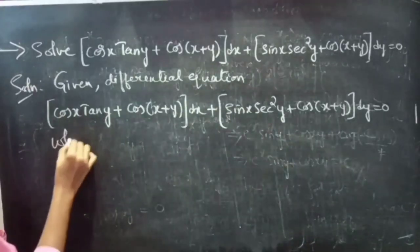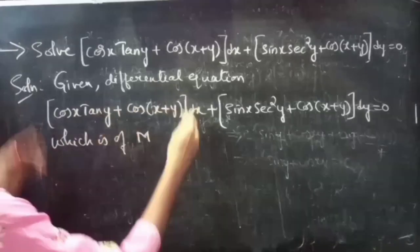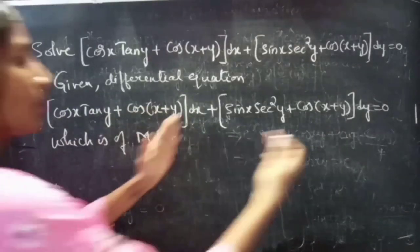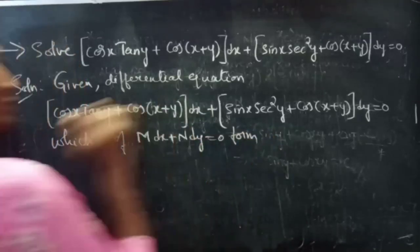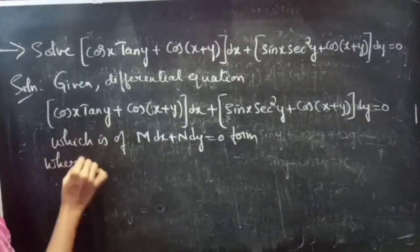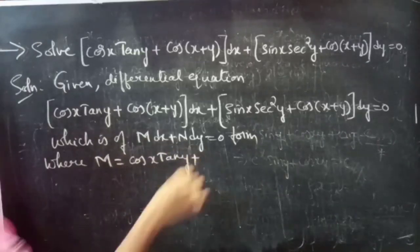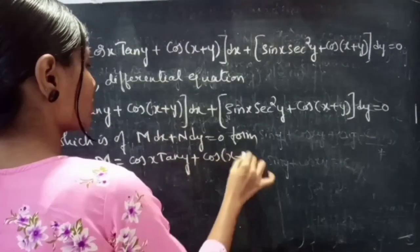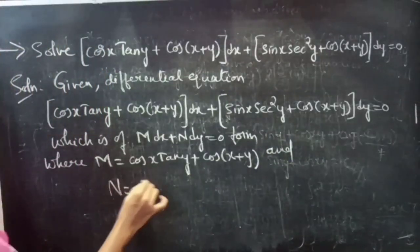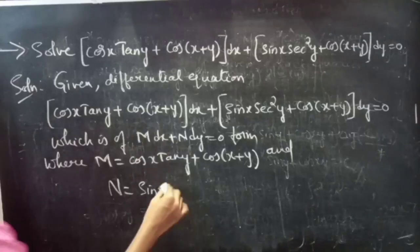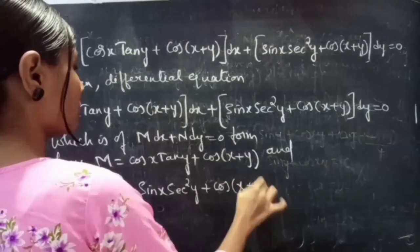The given differential equation is of the form M dx + N dy = 0. By comparing these two, M equals cos x · tan y + cos(x+y), and N equals sin x · secant² y + cos(x+y).